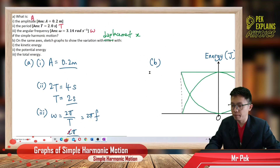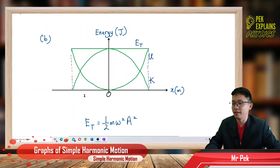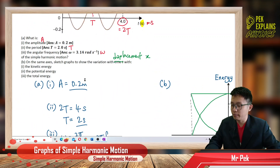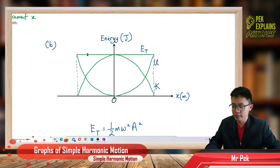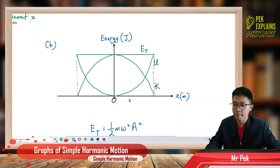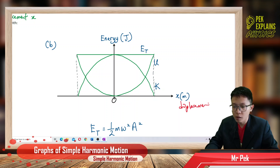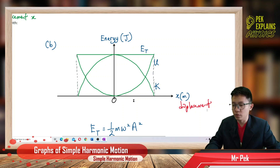For the energy-displacement graph, the total energy is constant. The potential energy has a 'smiling' parabolic shape — it is zero at the equilibrium position. The x-axis is displacement and the y-axis is energy. When displacement is zero, potential energy is zero.